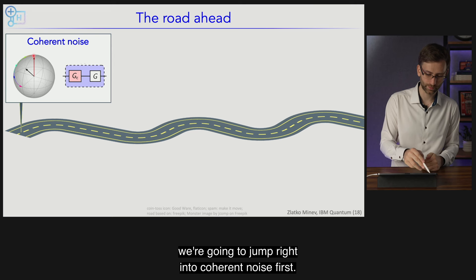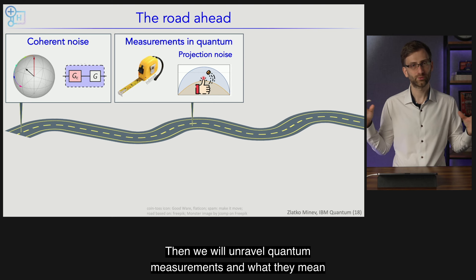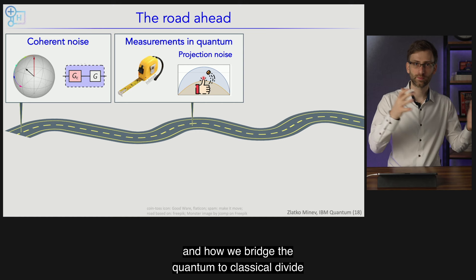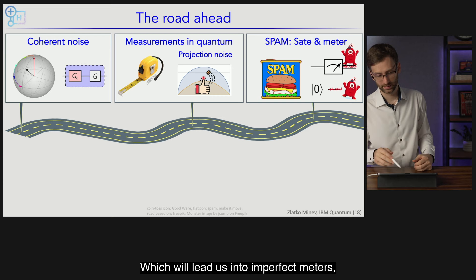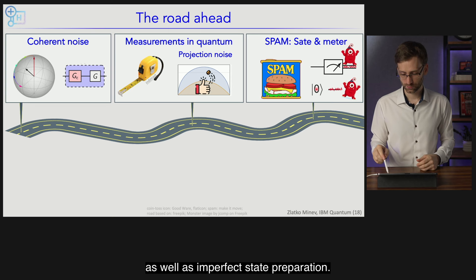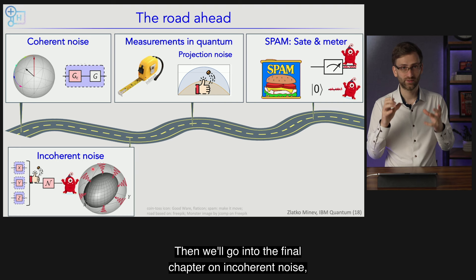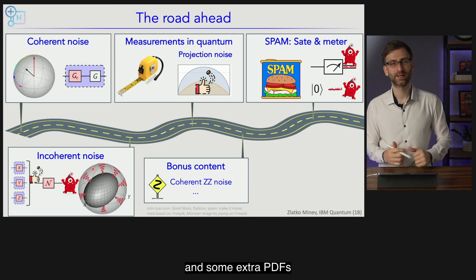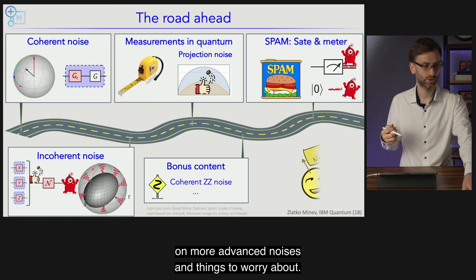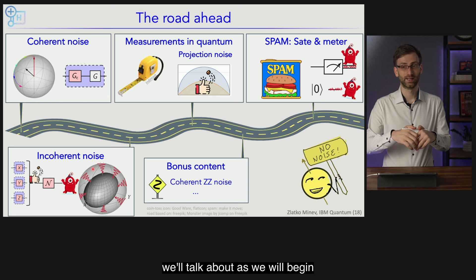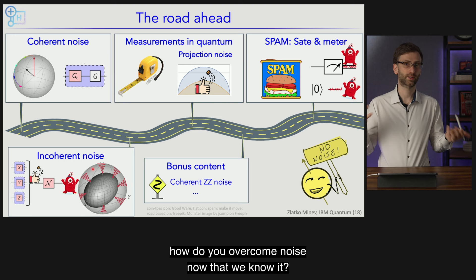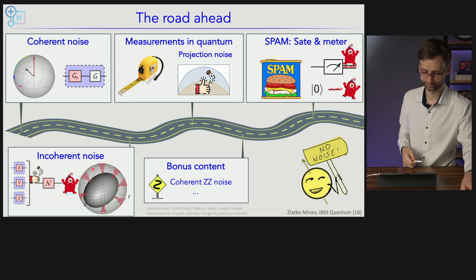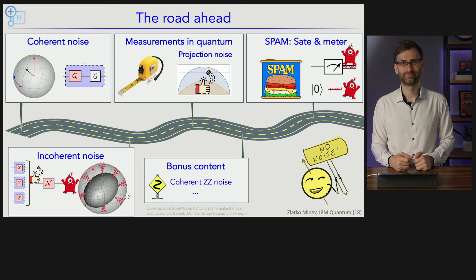On our road ahead, we'll jump into coherent noise first. Then we'll unravel quantum measurements — how we bridge the quantum-to-classical divide — and discuss fundamental limitations, imperfect meters, and imperfect state preparation. Then we'll go into the final chapter on incoherent noise. There's bonus content and extra PDFs on more advanced noises. In the following lecture we'll begin to show the outlook toward how to overcome noise: understand and then overcome. Time to get into it.